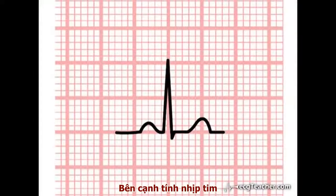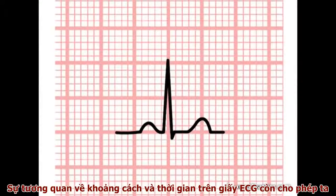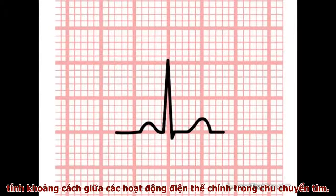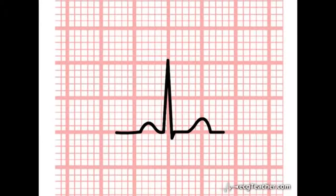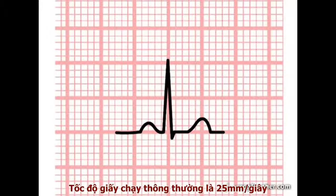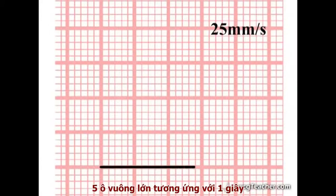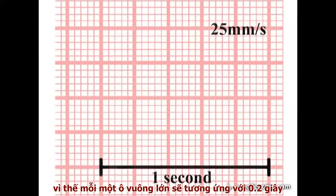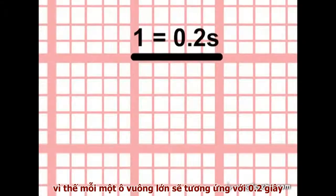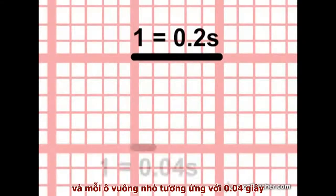In addition to calculating heart rate, the fact that distance on the ECG paper equates to time allows us to use the readout to time the duration of the major events of the cardiac cycle. At a standard recording speed of 25 mm per second, five large squares corresponds to one second. Therefore one large square corresponds to one-fifth of a second, and one small square to 0.04 seconds.